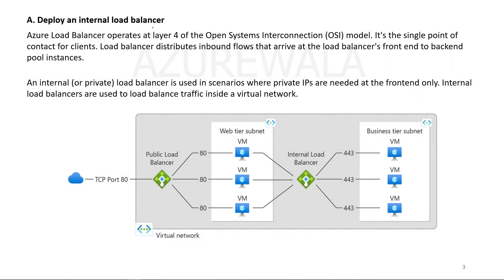Option A: Deploy an internal load balancer. An Azure load balancer operates at Layer 4 of the OSI model. It is a single point of contact for clients. The load balancer distributes inbound flows that arrive at the load balancer's front end to backend pool instances. An internal or private load balancer is used in scenarios where private IPs are needed at the front end, and it is used to load balance traffic inside a virtual network.